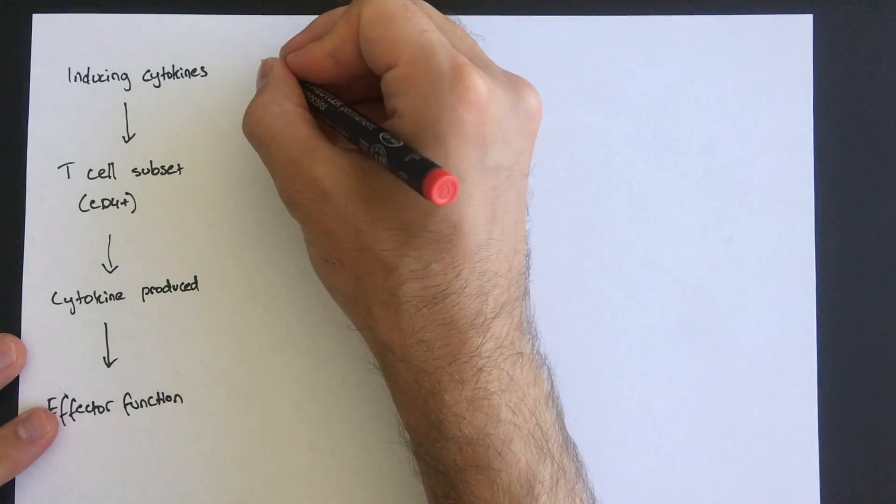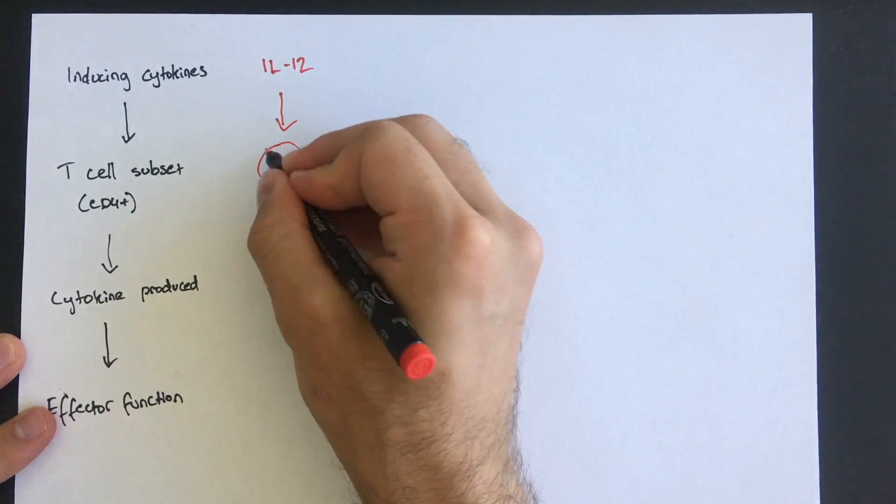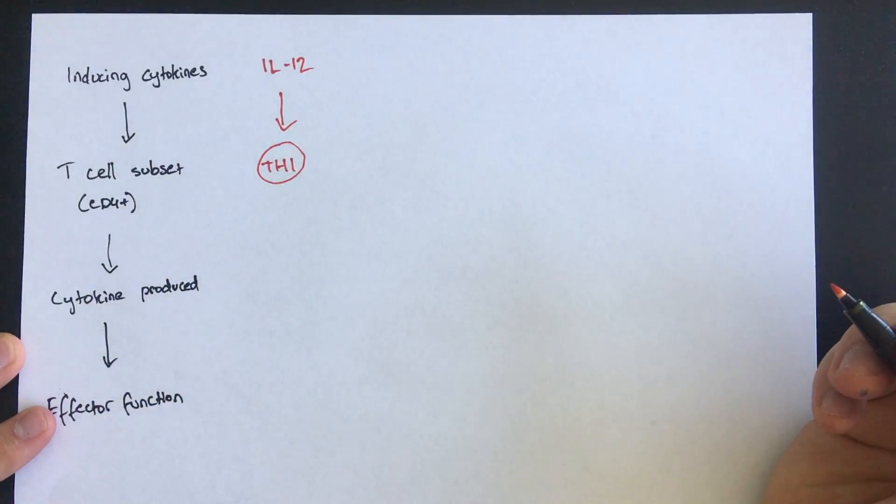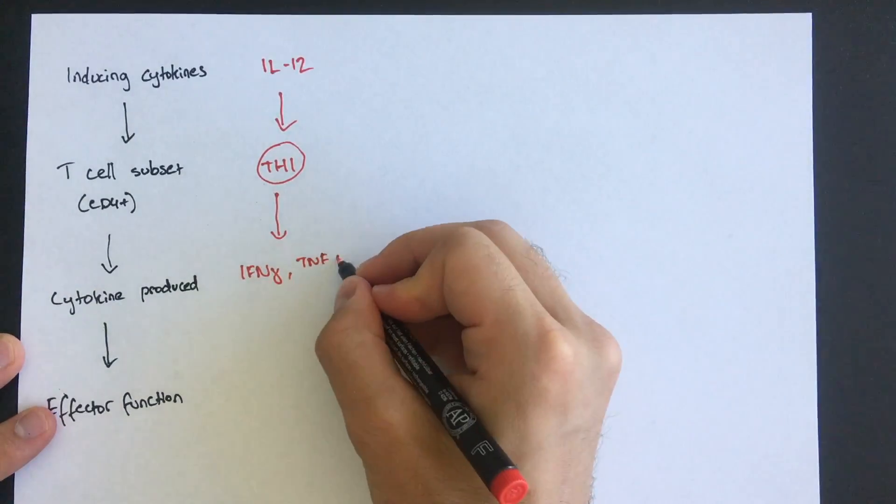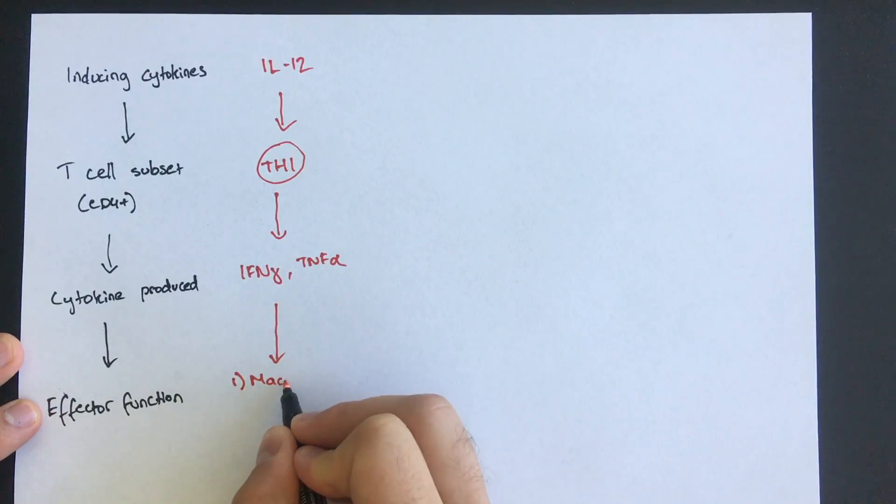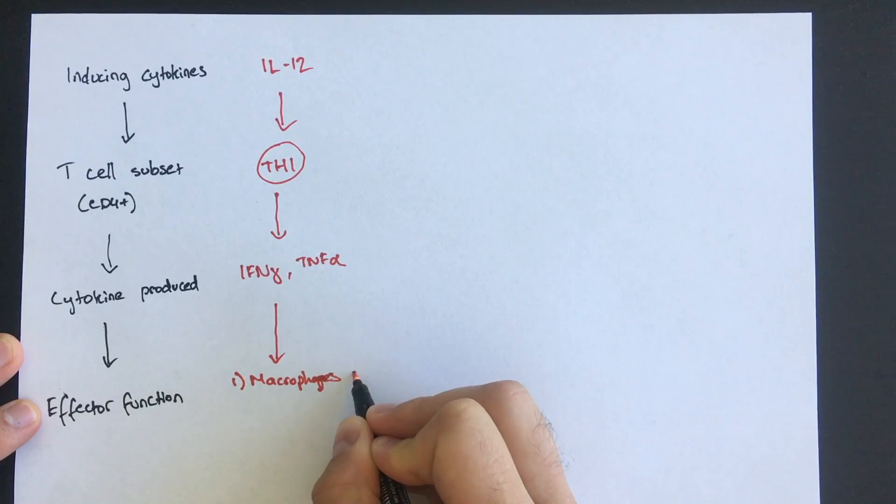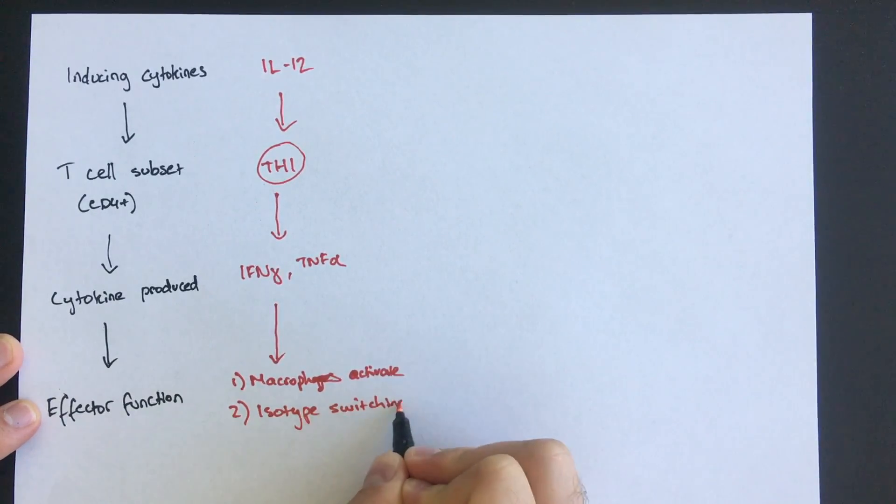So back to the schematic. As described before, interleukin-12 in the environment will cause T cells to differentiate into TH1 subset. They can produce interferon gamma as well as TNF alpha. These have two functions: they activate macrophages to help with responses to intracellular pathogens, and they also cause B cells to isotype switch their antibodies to IgG.